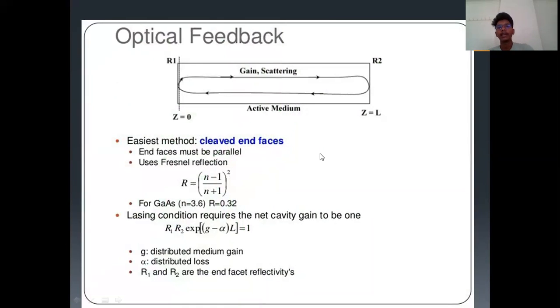In optical feedback, there are two types of methods. The easiest method uses cleaved end faces. End faces must be parallel. If there are no parallel mirrors, it would not reflect or make anything. It uses Fresnel Reflection. There is an important reflection in optical feedback that is Fresnel Reflection. The formula is R equals n minus 1 divided by n plus 1 whole square, where R is the Fresnel Reflection and n is the number of population it occurs. For gallium arsenide, we will have the Fresnel Reflection as 0.32.